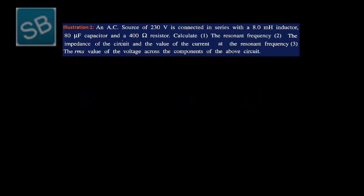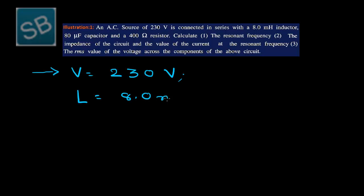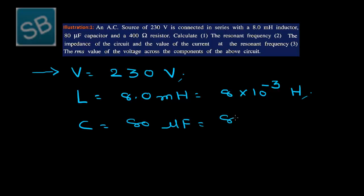Starting illustration 1: an AC source of 230 volts is connected in series with an 8 millihenry inductor, an 80 microfarad capacitor, and a 400 ohm resistor. Writing the given components: voltage V is 230 volts, inductor L is 8 millihenry, which is 8 into 10 to the power minus 3 henry, capacitor C is 80 microfarad, equal to 80 into 10 to the power minus 6 farad, and resistor R is 400 ohm.